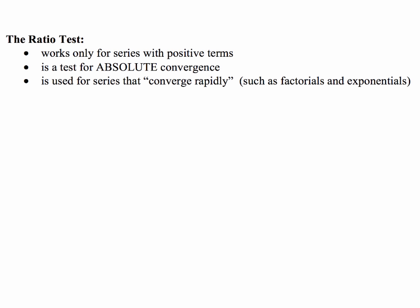So move along, pick another test. Now it's a test for absolute convergence, and it's going to be used for series that converge rapidly, and by rapidly what you want to look for are such things as factorials, so you might see something like this, an n factorial, or exponentials where you might have something where your variable is going to be in the exponent. So if you see something like that, or a factorial, that means you're probably going to want to use the ratio test.